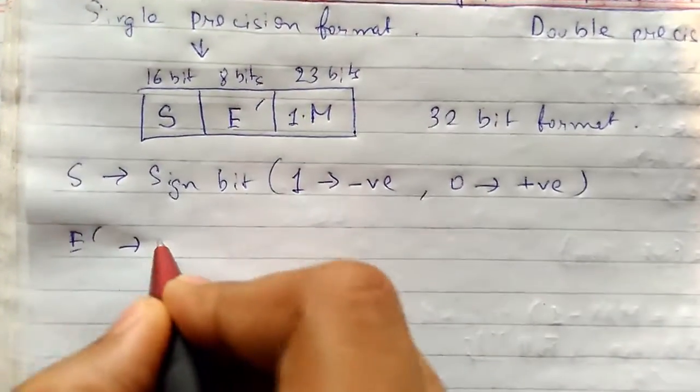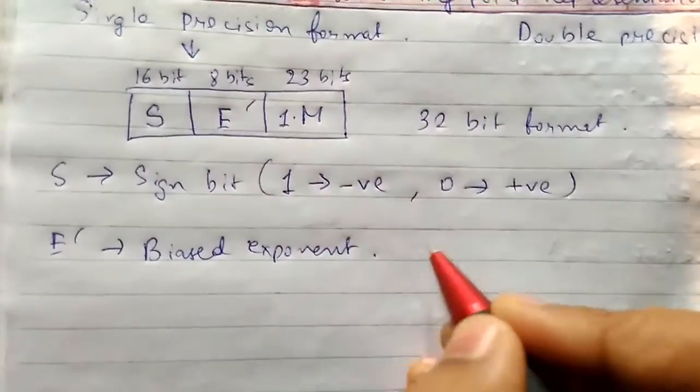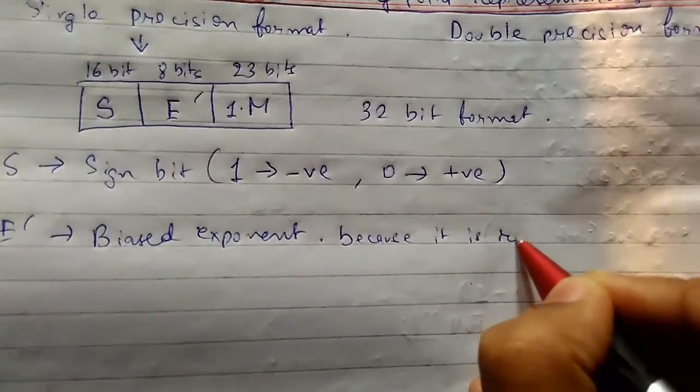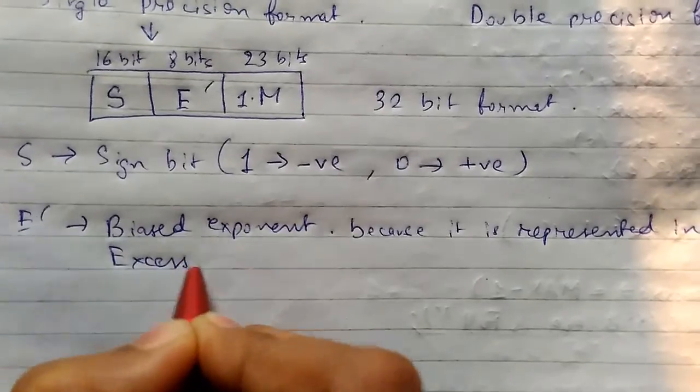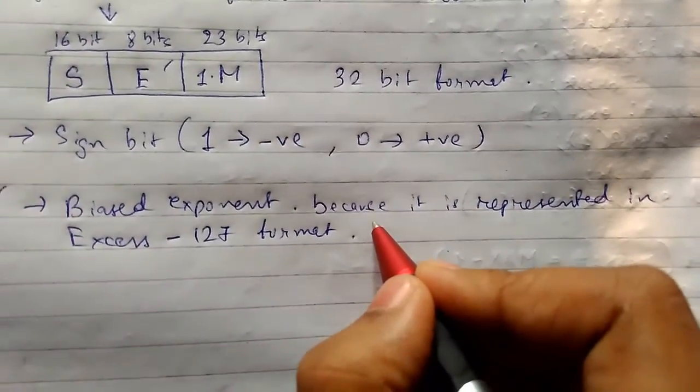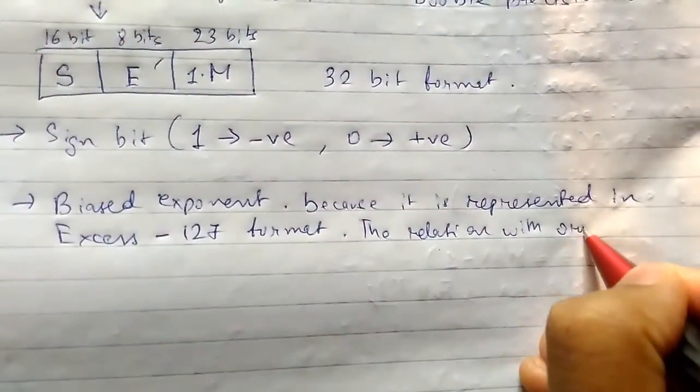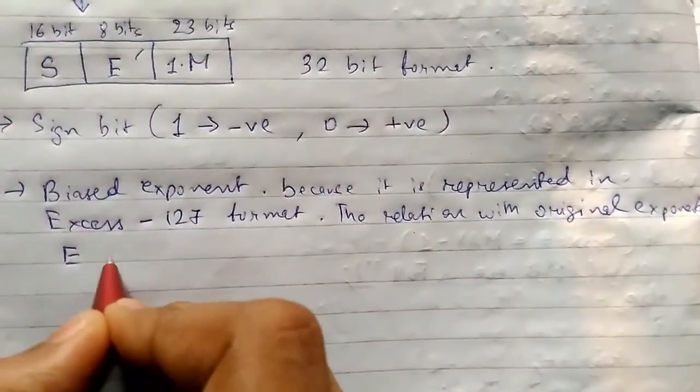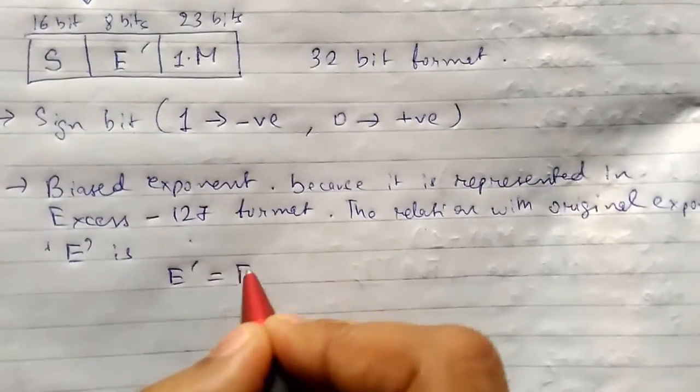E bar here is the biased exponent because it is represented in excess 127 format. The relation with original exponent E is E bar equals to E plus 127.